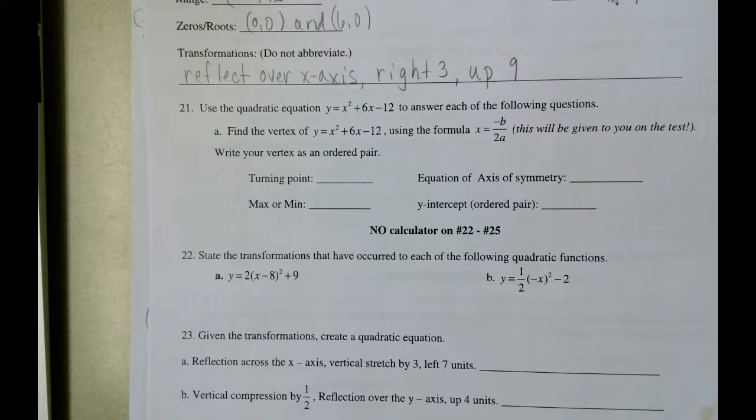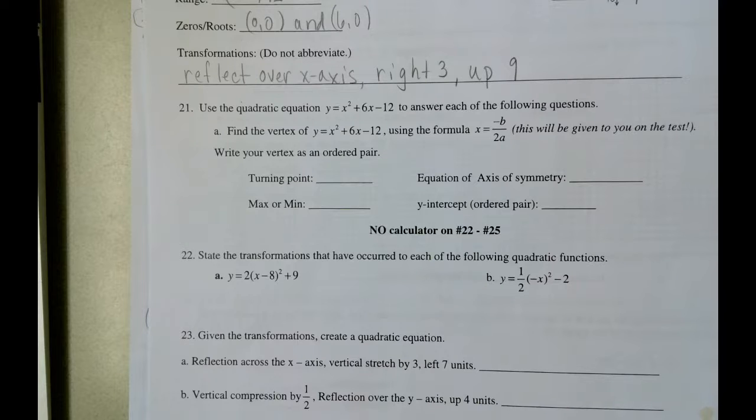Use the quadratic equation y equals x squared plus 6x minus 12 to answer each of the following questions. Find the vertex of that same equation using the formula x equals the opposite of b divided by 2a, and this will be given to you. We're going to write our answer as an ordered pair.